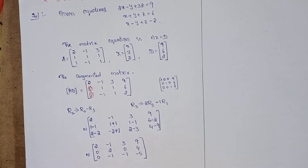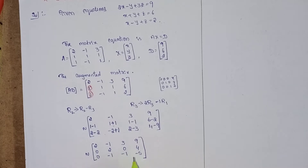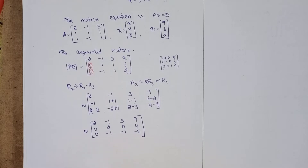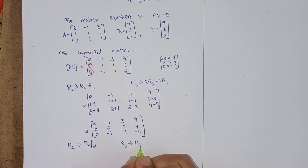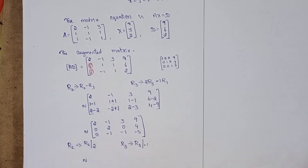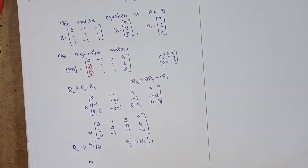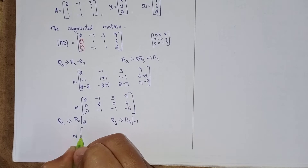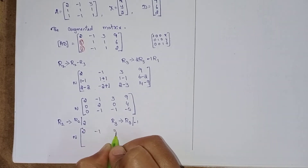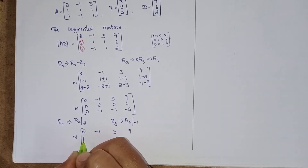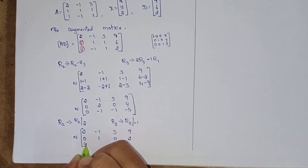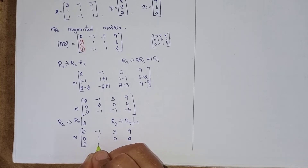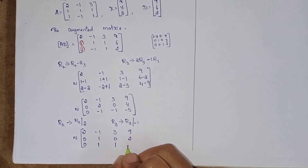Now in R2, divide by 2, and in R3, divide by minus 1. So R2 by 2: 0 by 2 is 0, 2 by 2 is 1, 0 by 2 is 0, 4 by 2 is 2. R3 by minus 1: 0 by minus 1 is 0, minus 1 by minus 1 is plus 1, minus 1 by minus 1 is plus 1, minus 5 by minus 1 is plus 5.